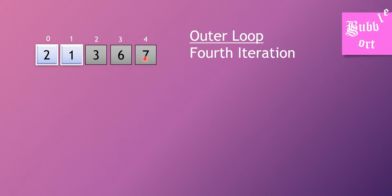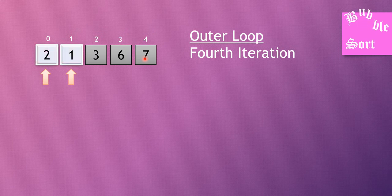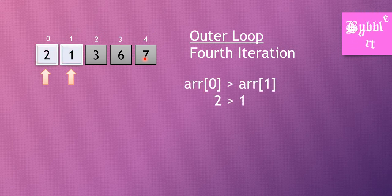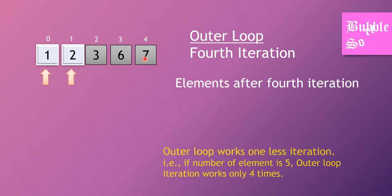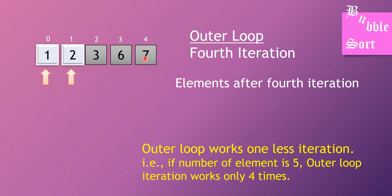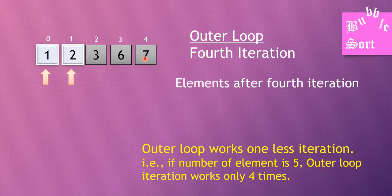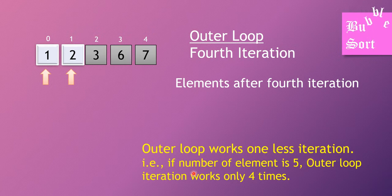In the fourth iteration, only the first two elements remain to be checked — index zero and one. ARR of zero is greater than ARR of one — two is greater than one — condition is true, so we swap. At the end of the fourth iteration, all elements are in order. Since we have five elements, the outer loop executes only four times — one less than the number of elements — and after those four iterations the array is fully sorted.